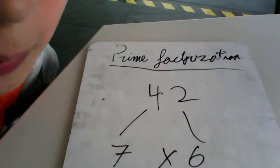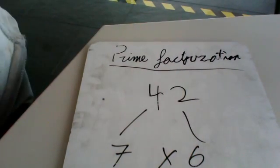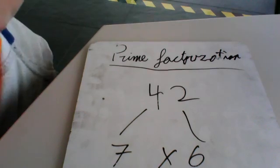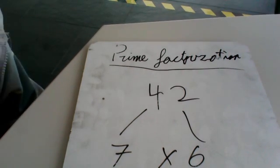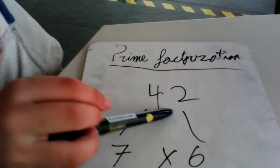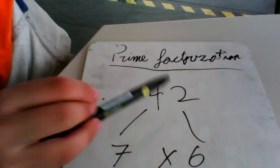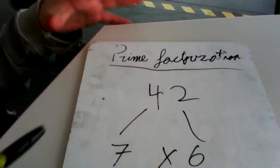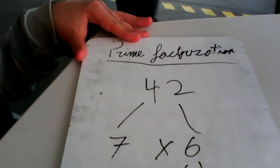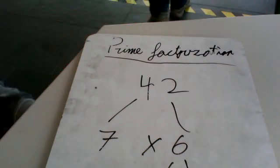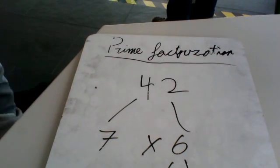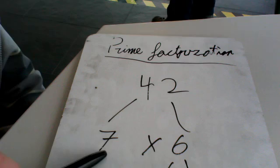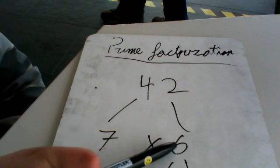Hi, I am Joop and I am going to explain you how to do prime factorization. Start with a composite number like 42. Then draw a factor tree that makes 42, like 7 times 6.